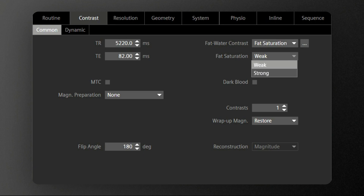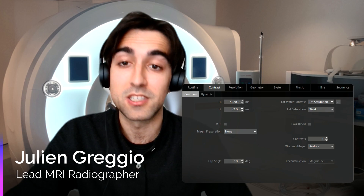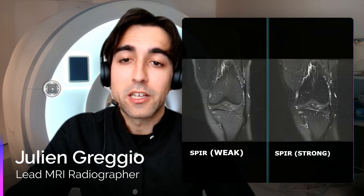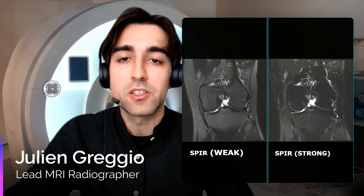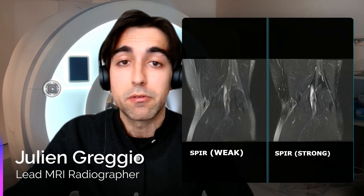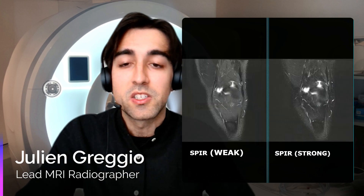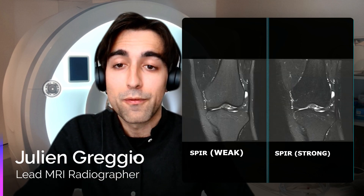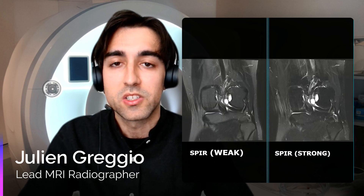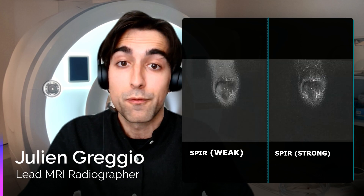Siemens specifically give us the opportunity to decide the intensity of the fat saturation. According to our personal and radiologist preferences, we might opt for a weak or a strong saturation of the fat. Just remember that there will always be, as usual in MRI, advantages and disadvantages from such a choice. Weak fat saturation requires lower flip angles, and as a result could be useful to reduce the SAR if necessary. Also, as we can see from this comparison, using a weak type of fat sat enables a more homogeneous saturation of the fat compared to a stronger fat sat technique.